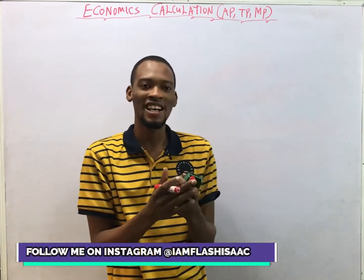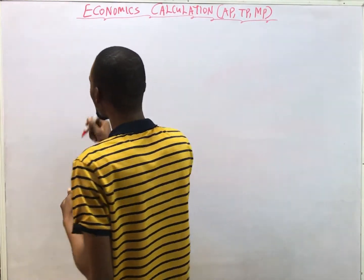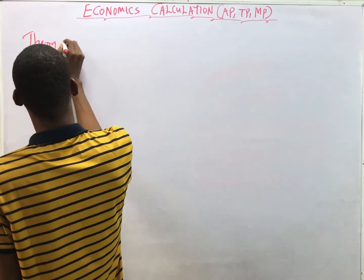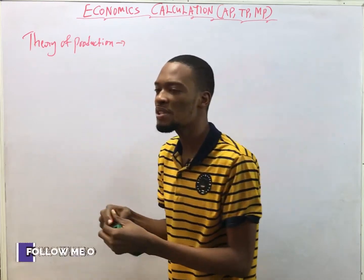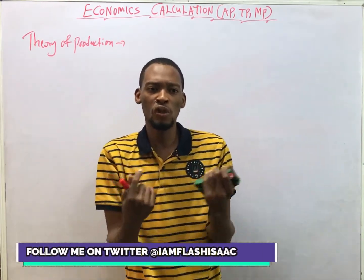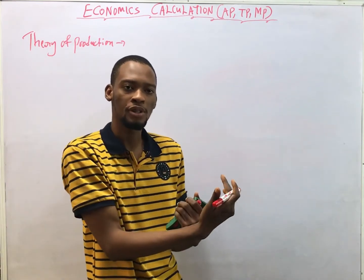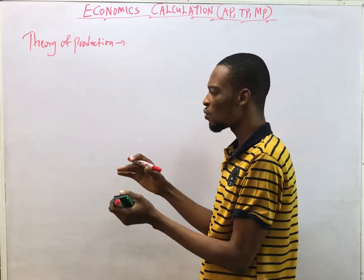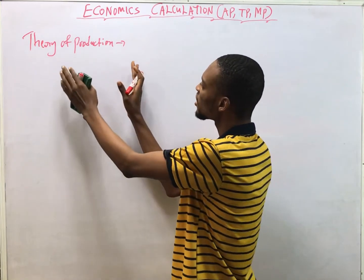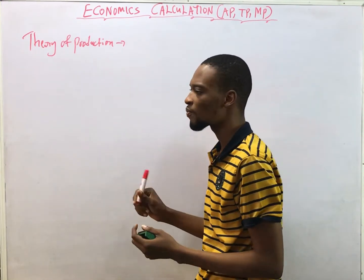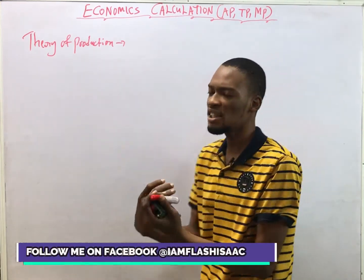Theory of production is what helps firms determine how much of which resources they need to produce a particular product. That's what makes them plan — how much labor do I need, how much capital do I need to execute this project? That's what the theory of production talks about.